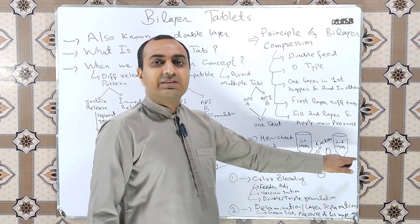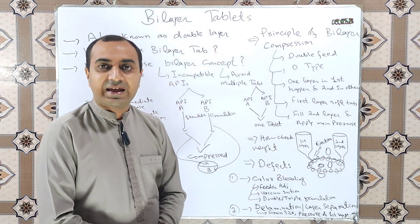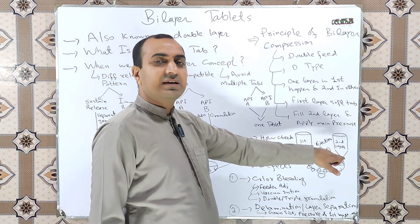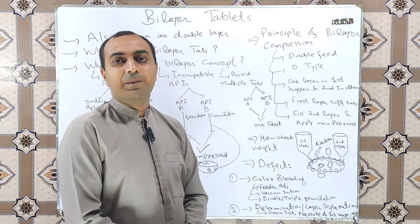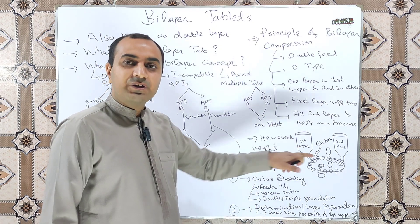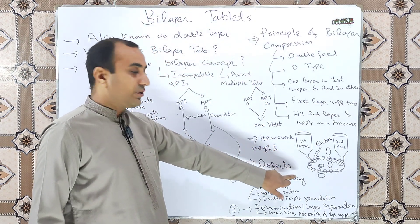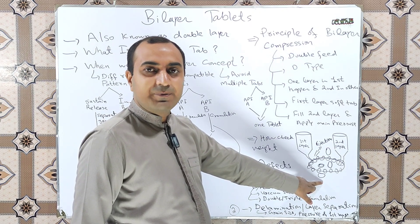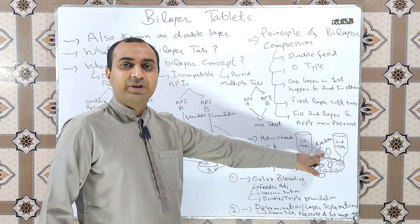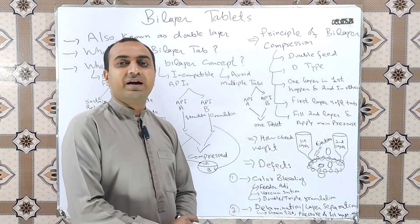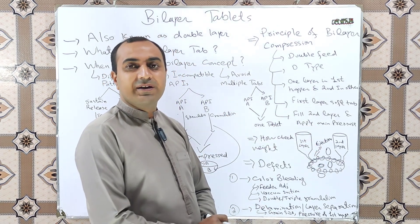When the dies move toward the second hopper as the turret rotates, and the dies pass through the feed frame of the second hopper, the powder or granules of the other layer are added over the first layer tablet. When these pass through the main pressure rollers, both layers are compressed together to form a single tablet. So in this way, two layers are combined into a single tablet — the two APIs are compressed in separate layers and combined using the main compression force, producing the double layer tablet.